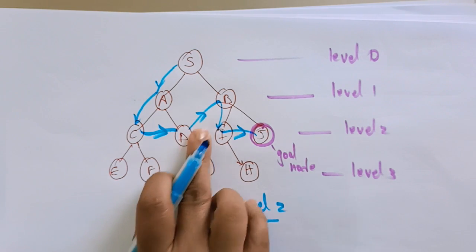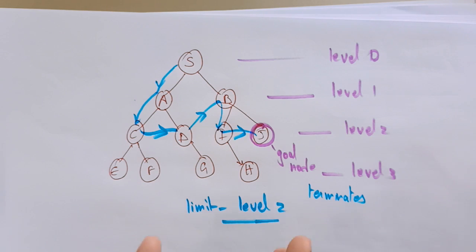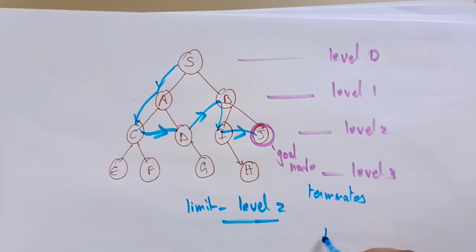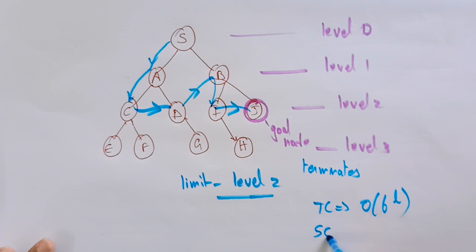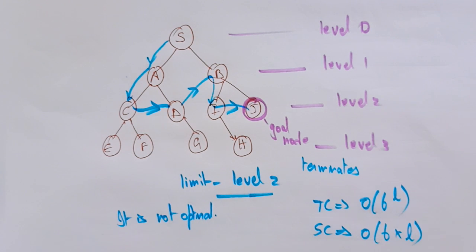After visiting I, we backtrack since B is already visited and go to J. Whenever it visits D it does not go to G because the limit is level 2. When it finds J, it terminates. Even if the goal node is not reached within the limit, it must terminate — that's why we say DLS can be incomplete. The time complexity is O(b^l), the space complexity is O(b × l), and it is not optimal even if l is less than d.